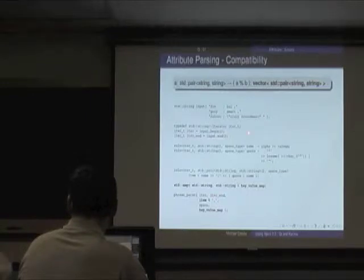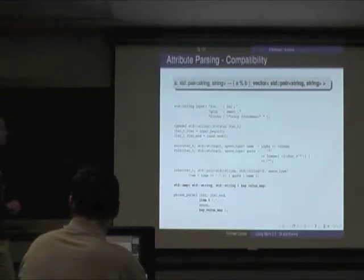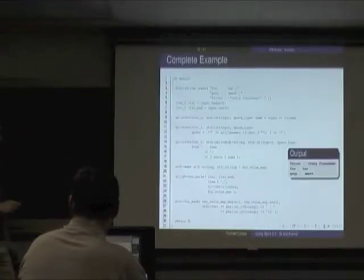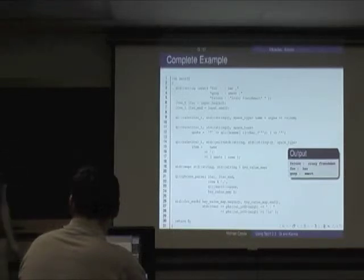What originally looked like there was no way to get this into a map without writing a lot of code — compatibility rules handle it all. We add a little Phoenix magic at the bottom with a for-each to print it, and voila, we get our output. Joel made it to the top because it's a map and it sorts.